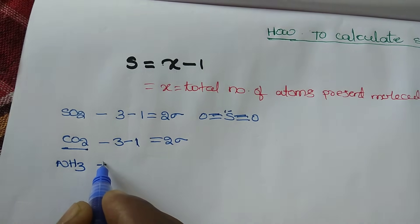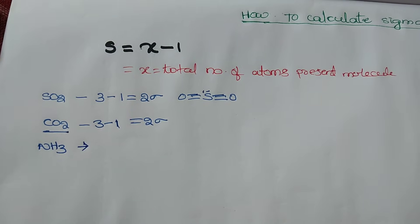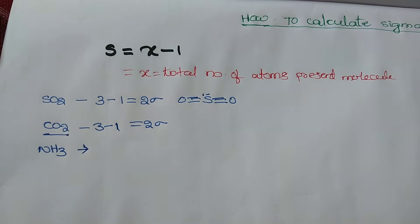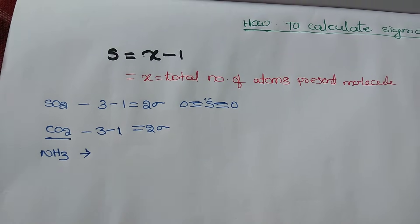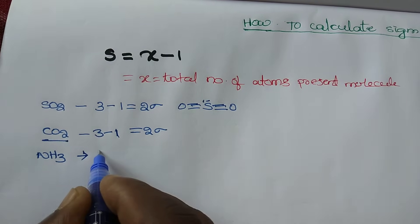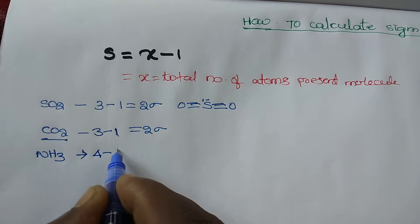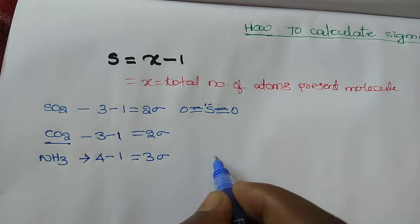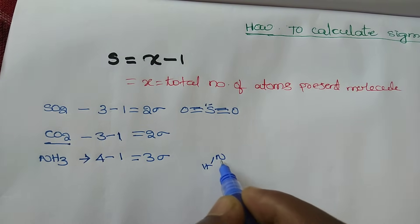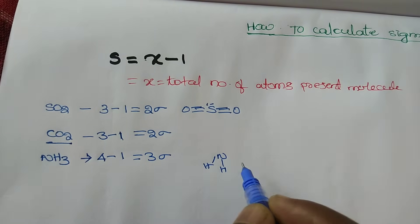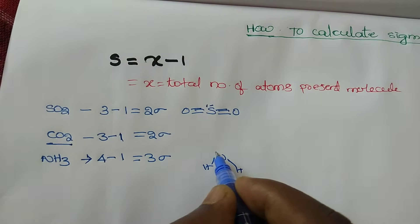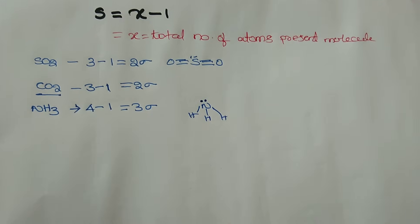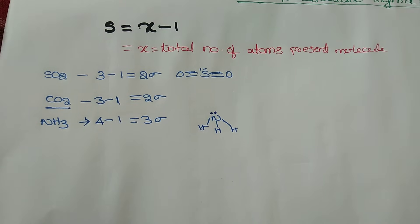Next, NH₃. I want to know how many sigma bonds are in NH₃. The total number of atoms is four. So four minus one equals three sigma bonds. Drawing the structure confirms three sigma bonds are present.